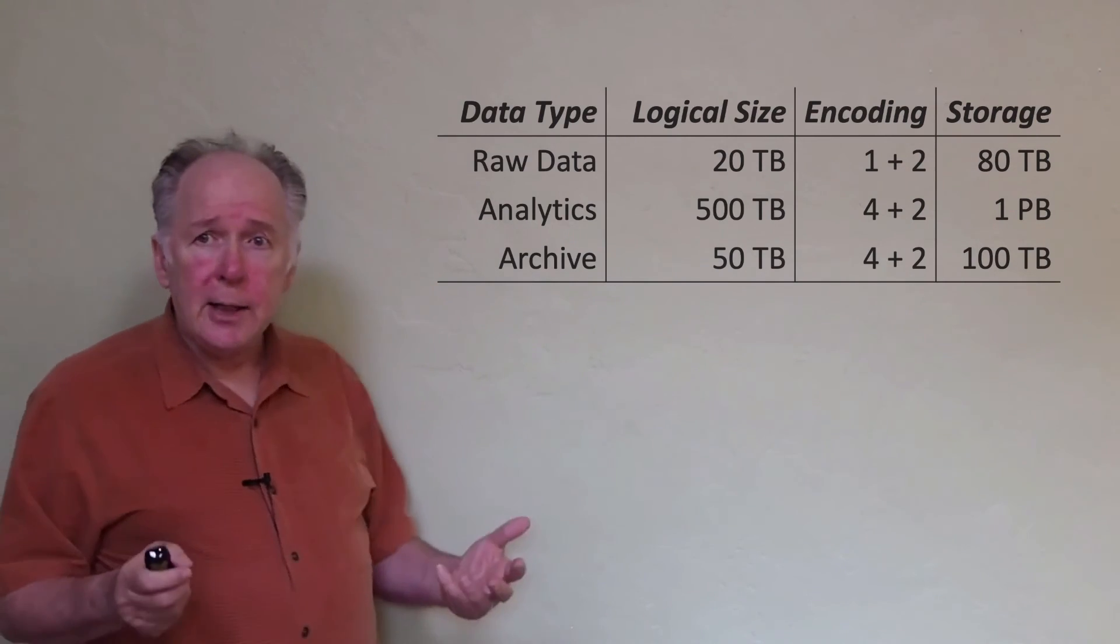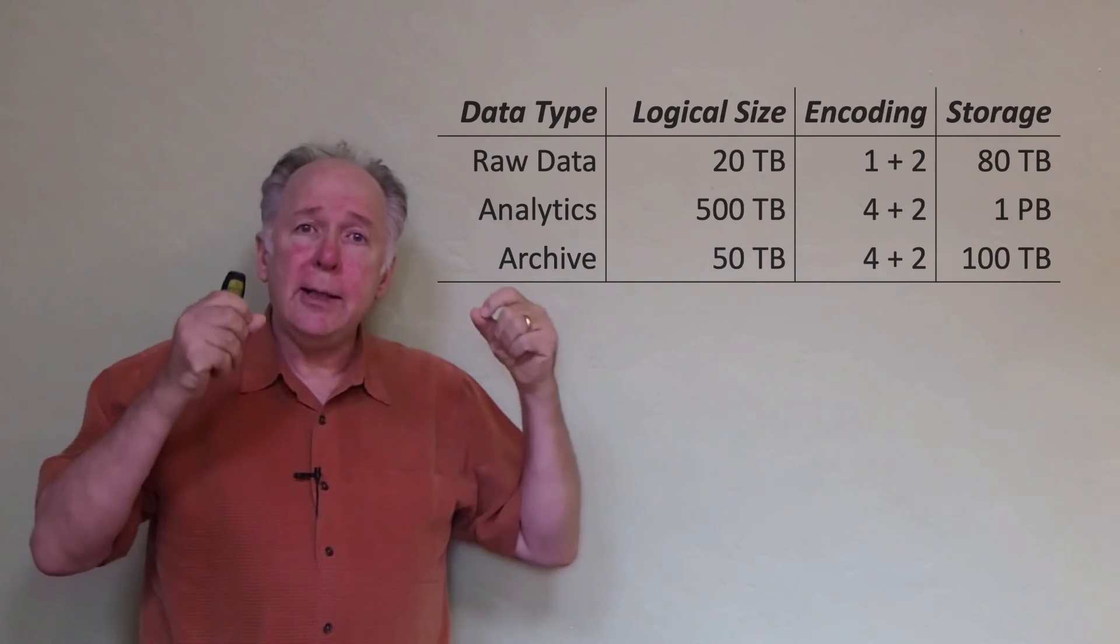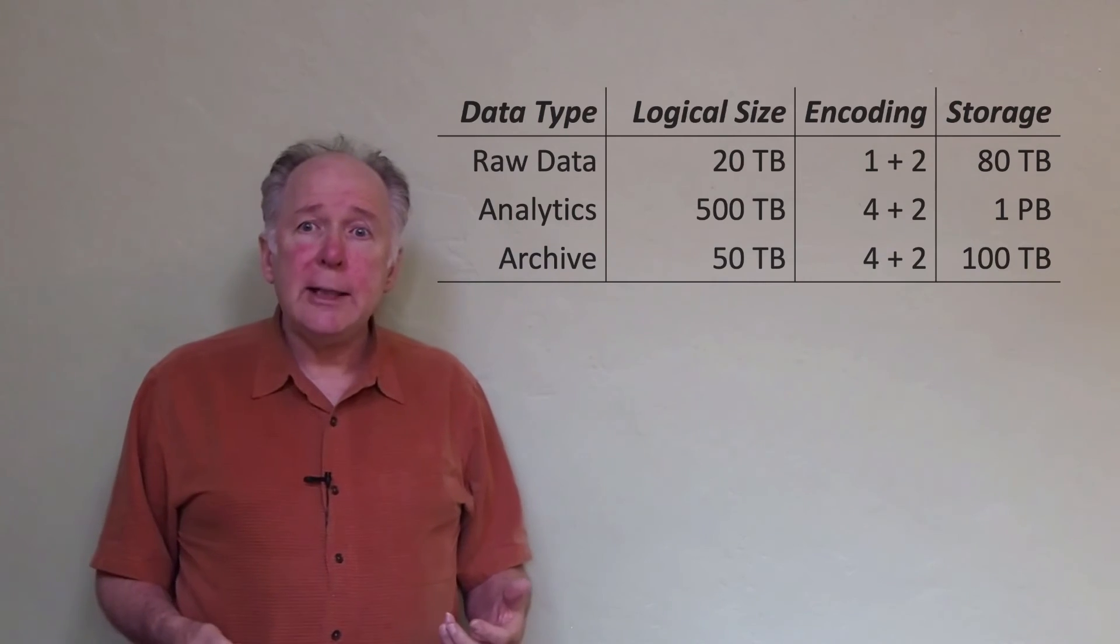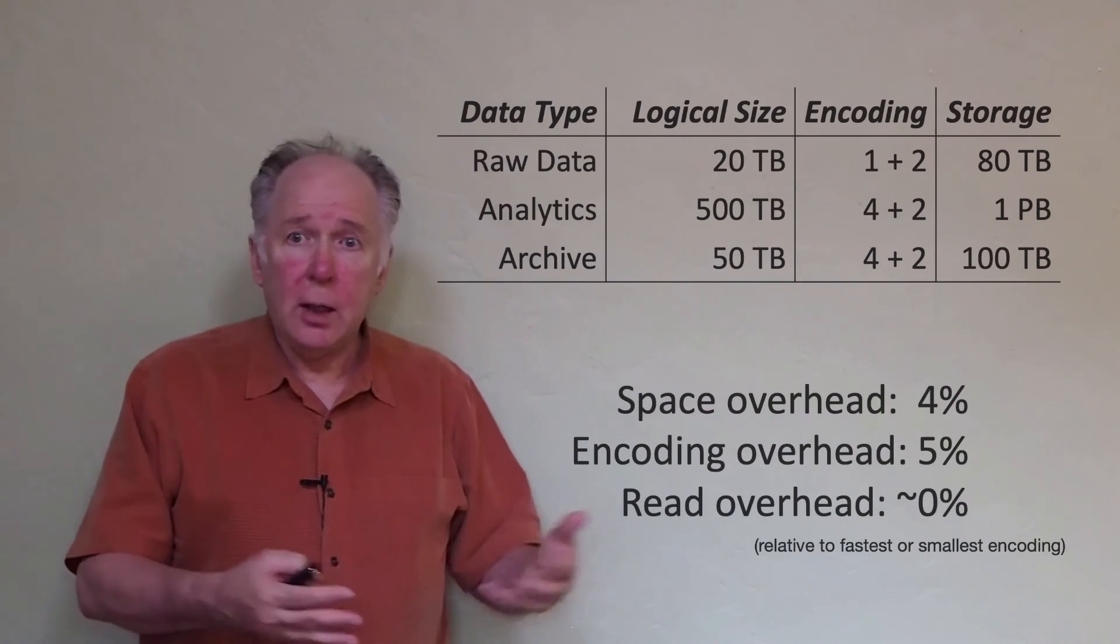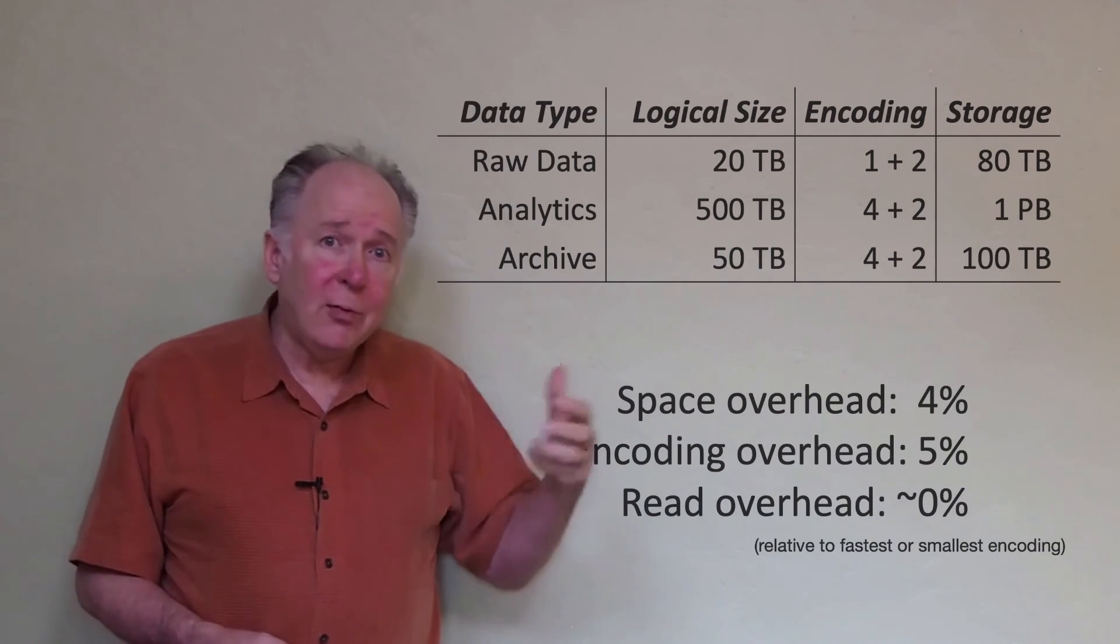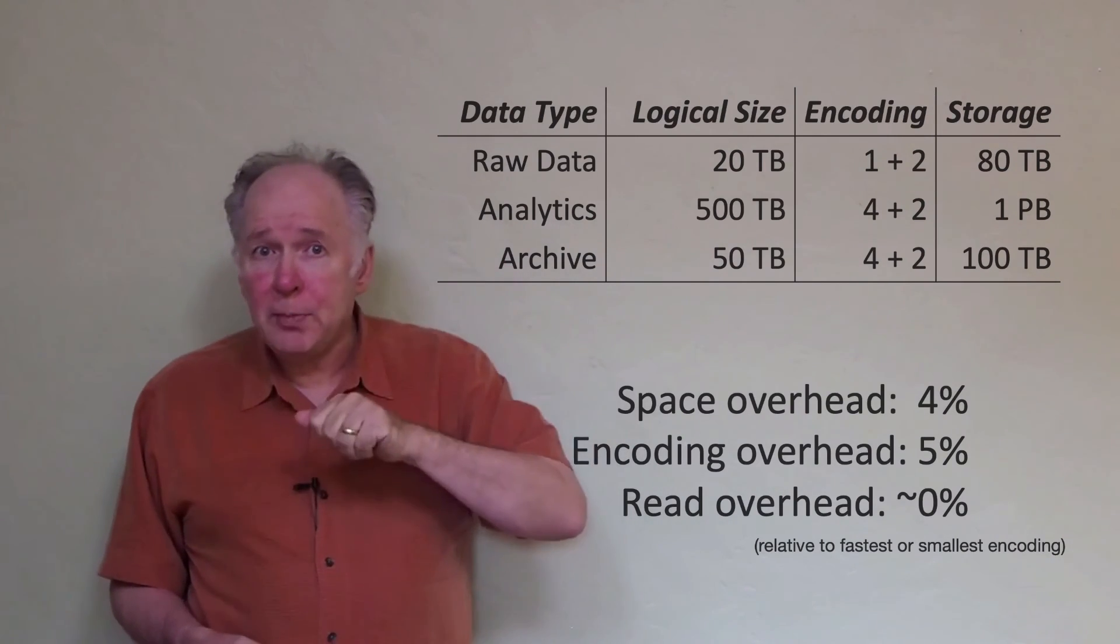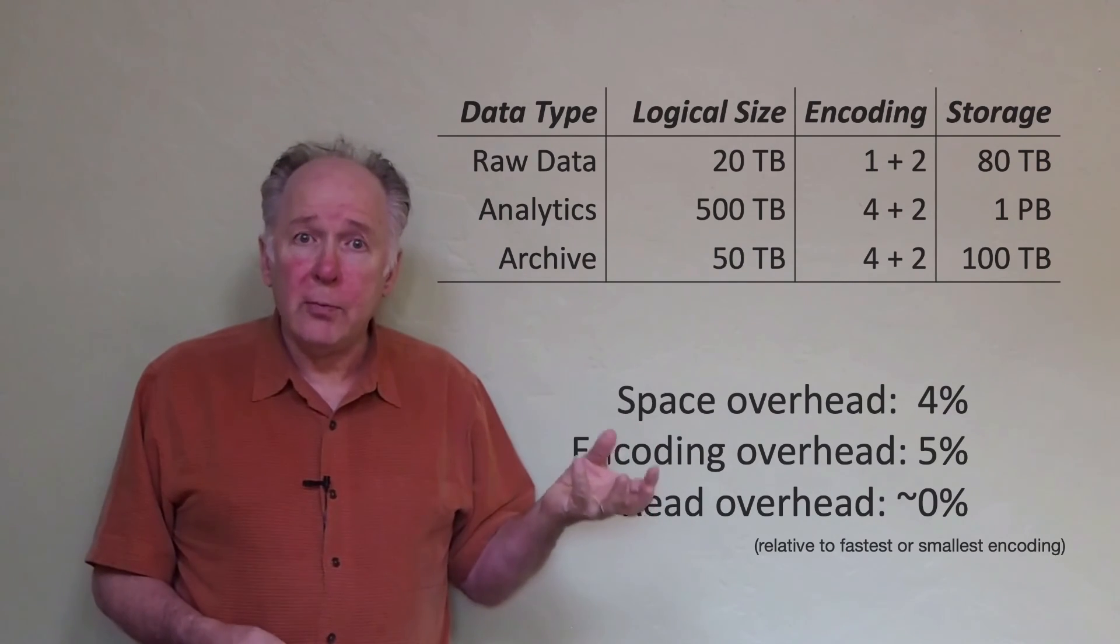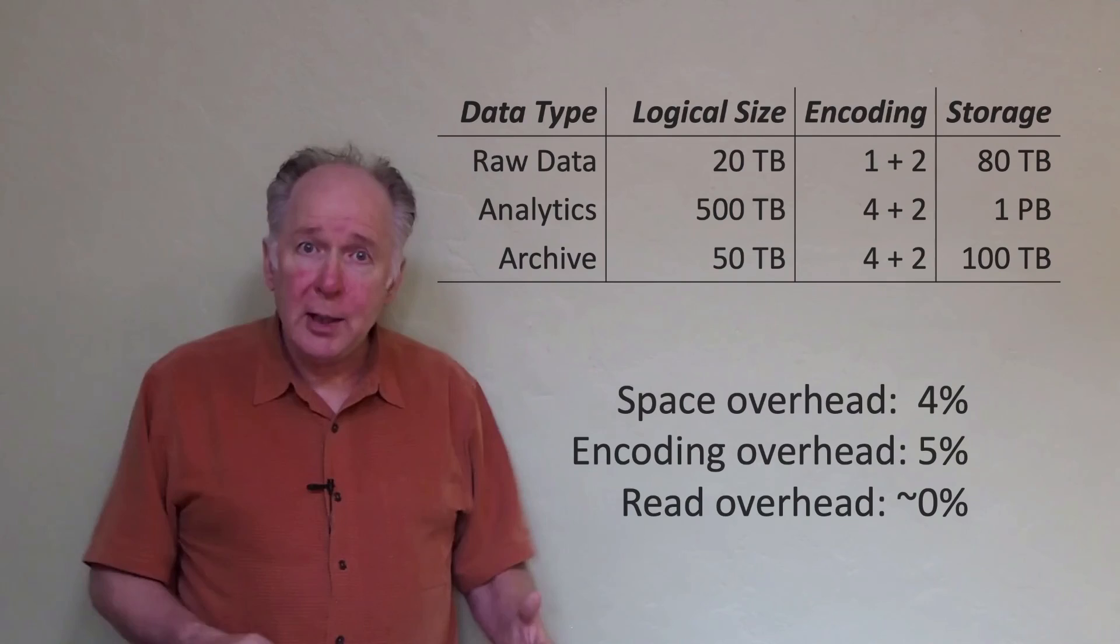Now, if you look at this, our size here is completely dominated by the analytical data, which is about a petabyte. On the other hand, the data write volume is very, very heavily dominated by the raw data. If we write out this sort of summary, we see that the space overhead, the total space required to store all of the data relative to the 4+2 encoding that we could do is about 4%. The cost of keeping the raw data in an inefficient encoding for performance reasons is only about 4%. On the other hand, the performance penalty of doing the erasure coding, because we only do the erasure coding on the compressed data, is also right around 5%. So we're getting the best of both. We're getting the performance of the 1+2 encoding, and we're getting the space of the 4+2 encoding.